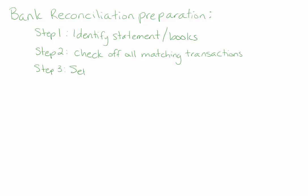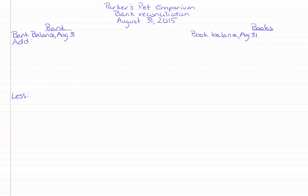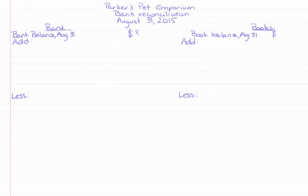Step three is to set up your template. You can set up your bank reconciliation template the same way every time, so when an exam comes around it's really easy to do. At the top, we put the company name — in this case, Parker's Pet Emporium — then what it is (a bank reconciliation), and the date, which is the last day of the month. From the bank statement, the last day is August 31st. On one side we have the bank and on the other side we have the books. On each side, we start with the balance at August 31st. The bank statement balance is $31,227 and the book balance in our general ledger is $31,957. These are different numbers, and that's okay — they differ because of potential errors and timing differences, which we're going to resolve.